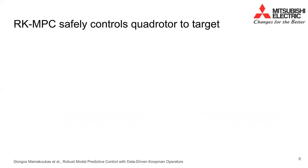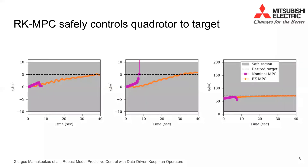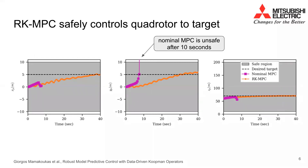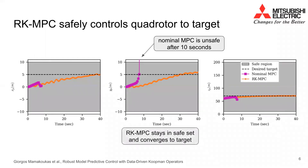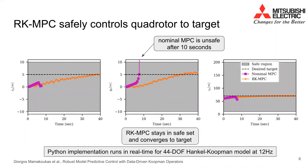We also use RK-MPC on the dynamics of a quadrotor and show that it safely converges to the target, whereas nominal Koopman MPC violates the state constraints and exits the safe boundary after only 10 seconds. Using two past measurements of state and control in the basis functions, the trained Koopman model has 44 degrees of freedom and runs in real-time with our Python implementation.